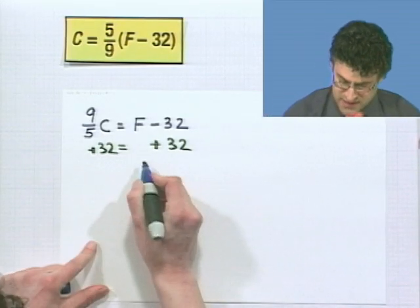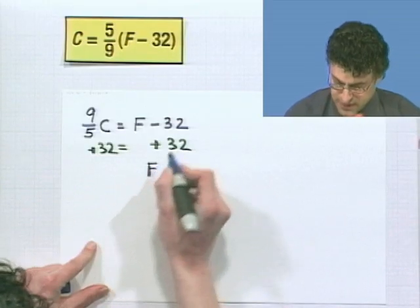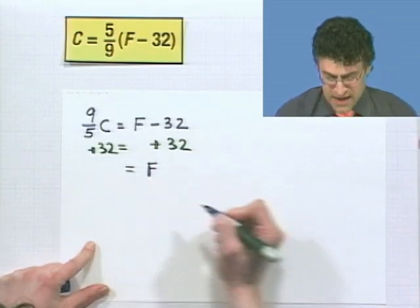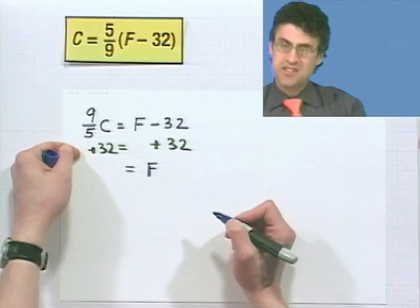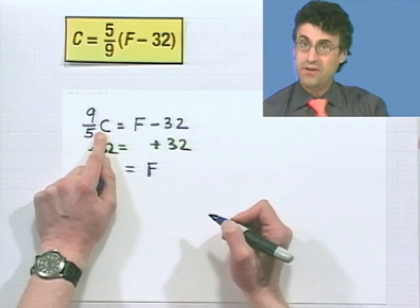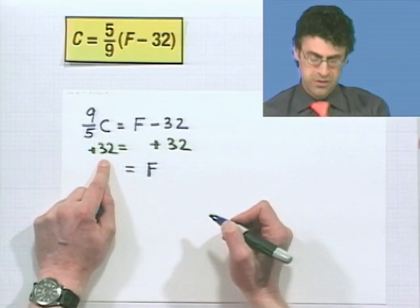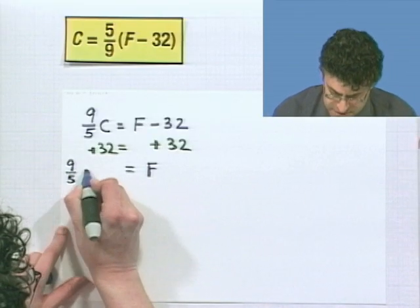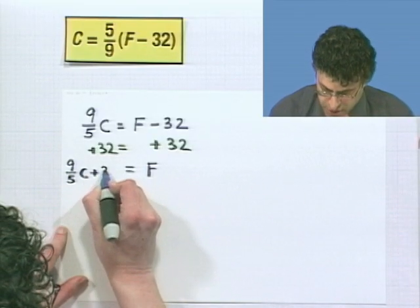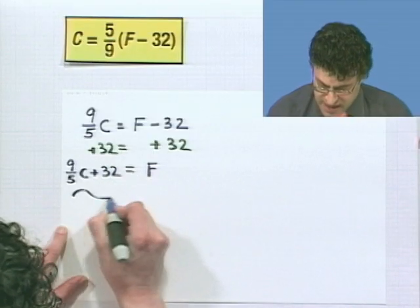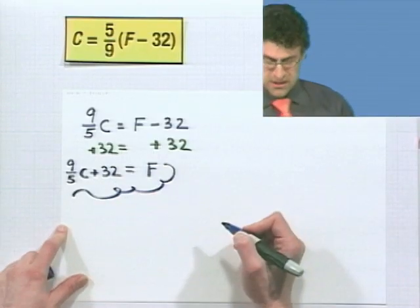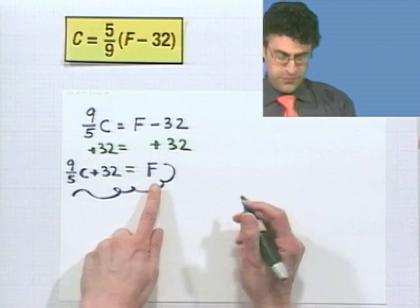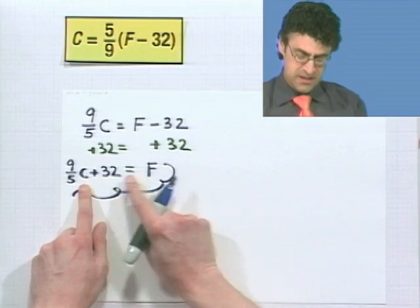So now what do I want to do? What I want to do is solve for F, so I should add to both sides 32 to undo the subtraction, both sides to keep everything fair and balanced. Now, on the right-hand side, that's kind of easy. I'm just left with F plus 0. Now, here, you can't combine these because there's a C here. There's that variable, and this is a number, 32. So all I can write is 9 fifths C plus 32.